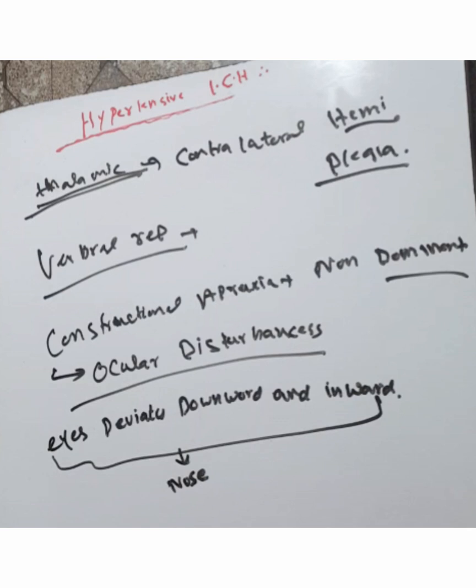The deviation of the eyes can sometimes be opposite to the hemorrhage, but mostly the eyes deviate downward and inward in thalamic intracranial hemorrhage. See you next time.